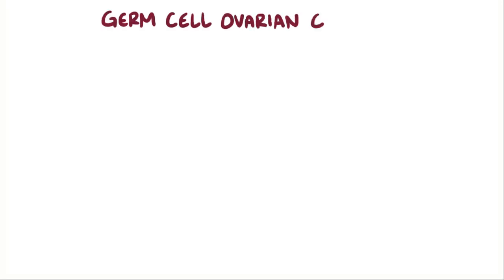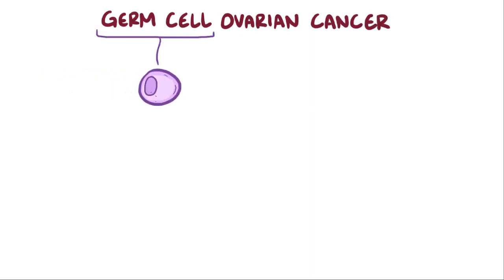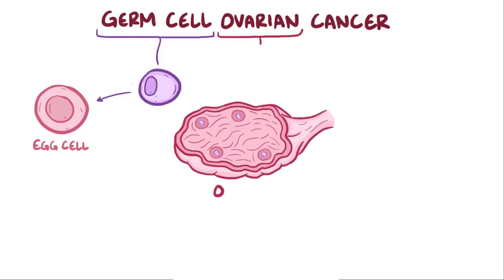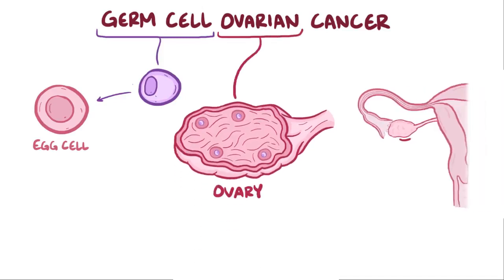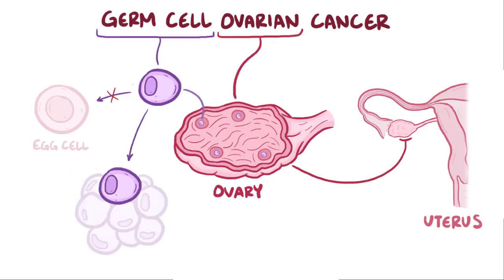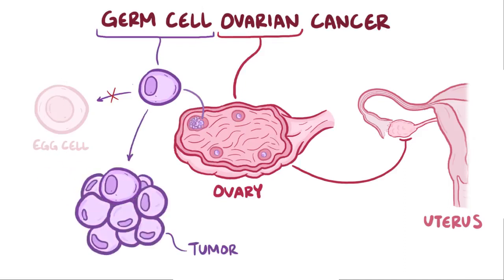With germ cell ovarian cancer, germ cell refers to the precursor cells that develop into eggs. Ovarian refers to the ovary, of which there are two that sit on either side of the uterus, which is where the germ cells live. So a germ cell ovarian cancer refers to situations where these precursor germ cells become cancerous and form tumors.